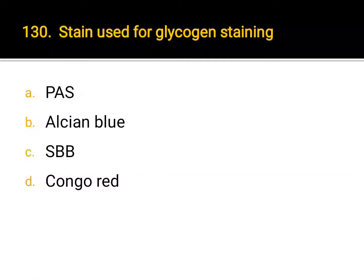Stain used for glycogen staining: A. PAS, B. alcian blue, C. SBB, D. Congo red. Correct answer: A. PAS.